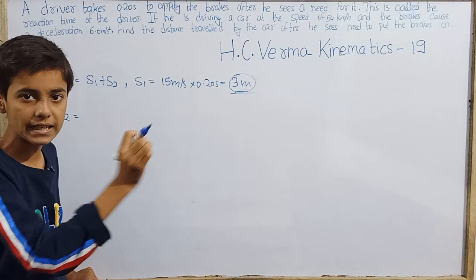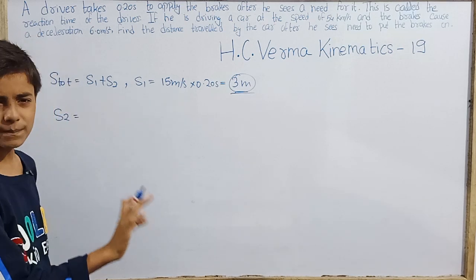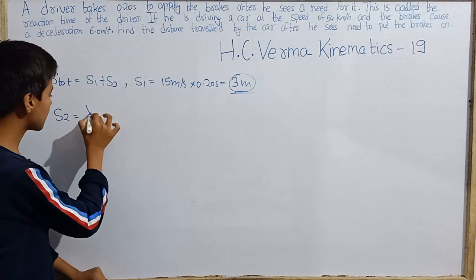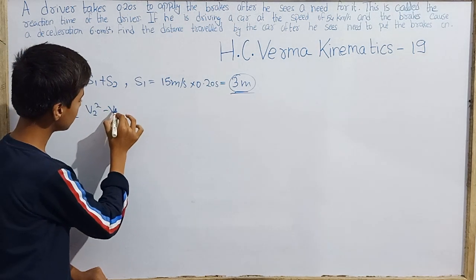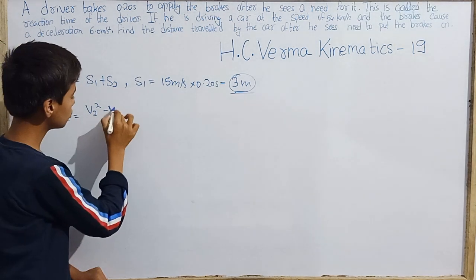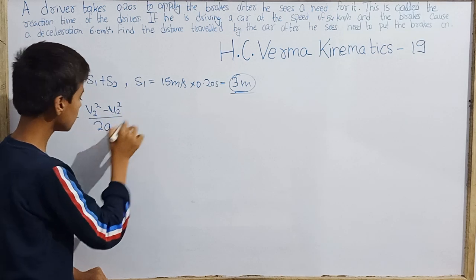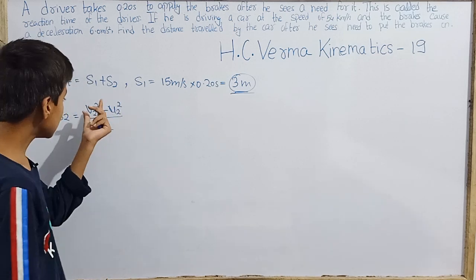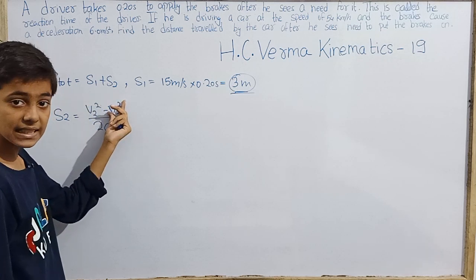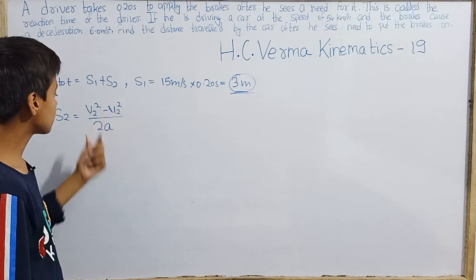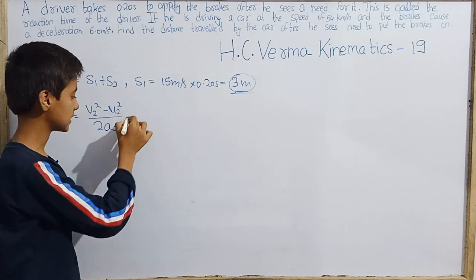For S2, we could use S = u₂t₂ + ½a₂t₂², but the best approach is to use v₂² = u₂² + 2a₂S₂, rearranged as S2 = (v₂² − u₂²) / (2a₂). This is the second journey, from when brakes are applied until the car stops.